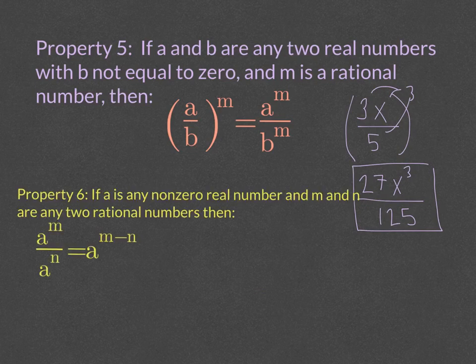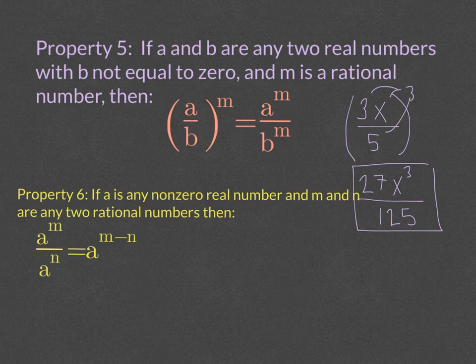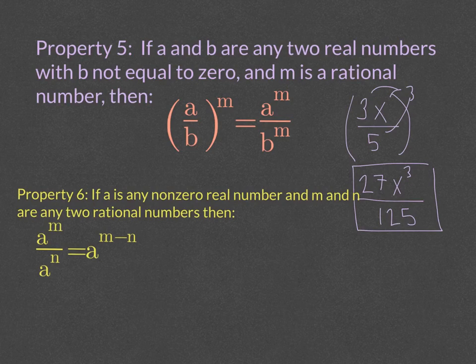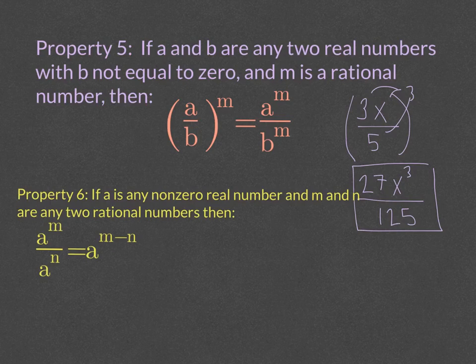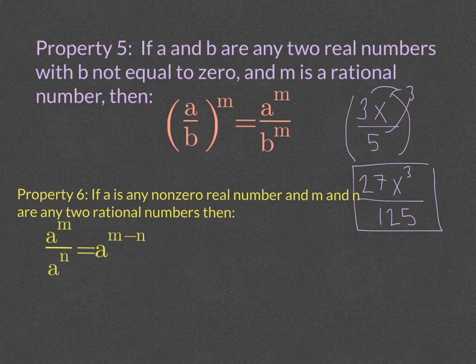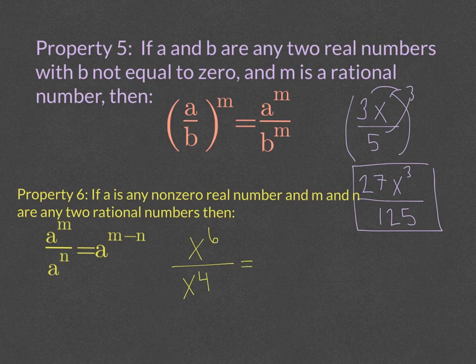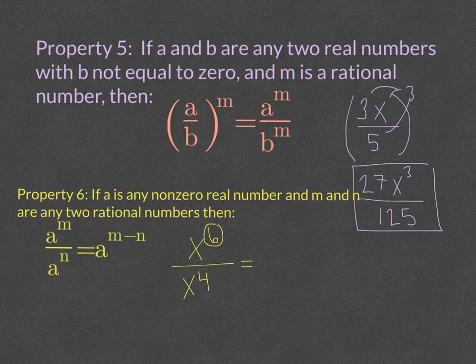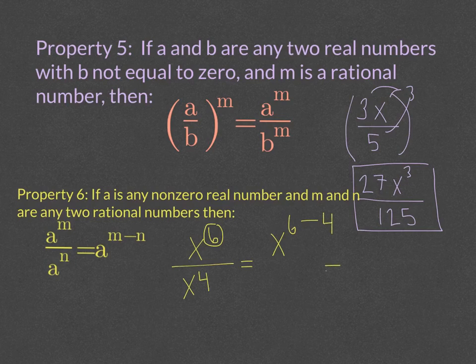Property 6 says that if a is any non-zero real number and m and n are any two rational numbers, then if you have a to the m over a to the n, that is equal to a to the m minus n. So when we multiplied the two different numbers that have the same base, we added the powers. So if we are dividing the two numbers, we will subtract the powers. If we have, for example, x to the 6th over x to the 4th, and we want to simplify that, we simply take the bigger numbers on top and we subtract the smaller number from it. So 6 minus 4 would be x squared.